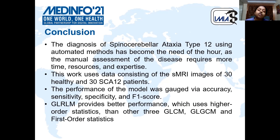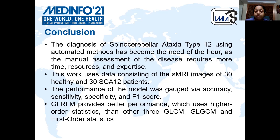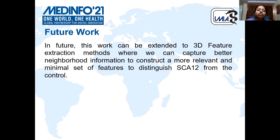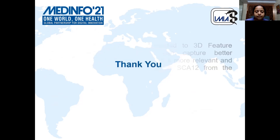We can conclude that the diagnosis of SCA-12 using automated methods has become the need of the hour. This work uses data consisting of structural images of 30 healthy and 30 SCA-12 patients, and performance was evaluated via accuracy, sensitivity, specificity, and F1 score. GLRLM-8 performs the best because it uses higher-order statistics not used in the other three methods. In future, this work can be extended to 3D feature extraction methods, where we can capture better neighborhood information to construct a more relevant and minimal set of features. Thank you.